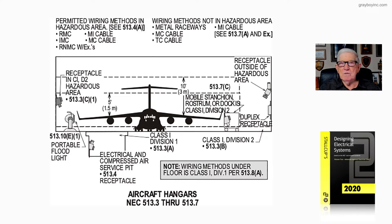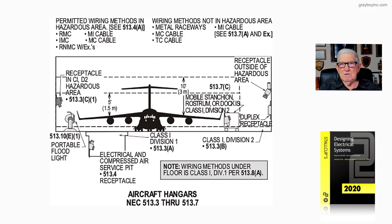In hazardous areas, you have rigid metal conduit, IMC, rigid non-metallic conduit, MI cable, and MC cable. There are some exceptions when using rigid non-metallic conduit, as noted in the illustration.